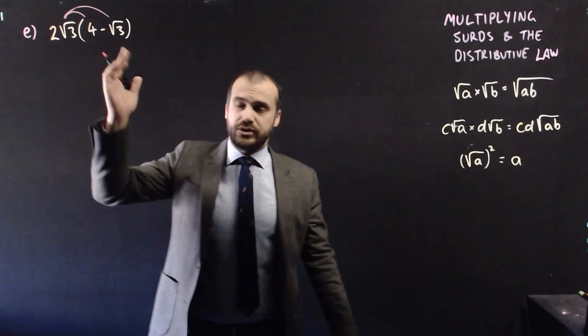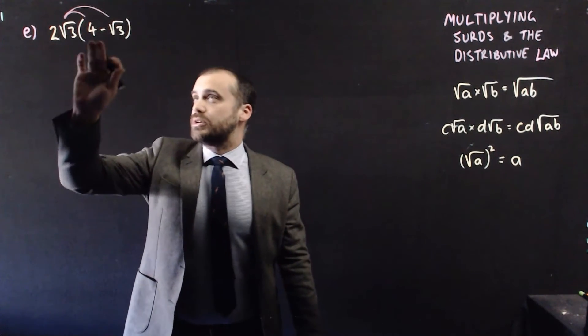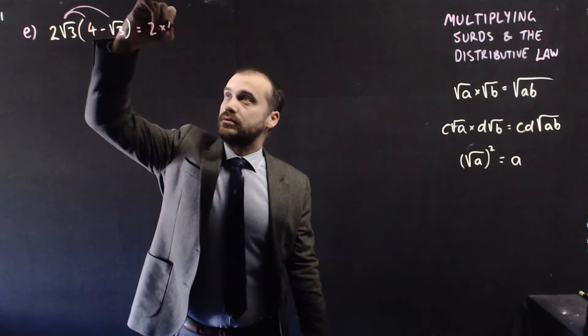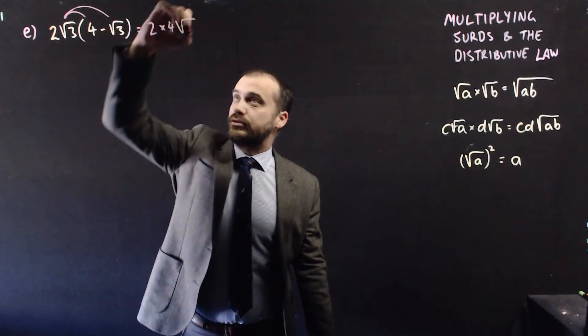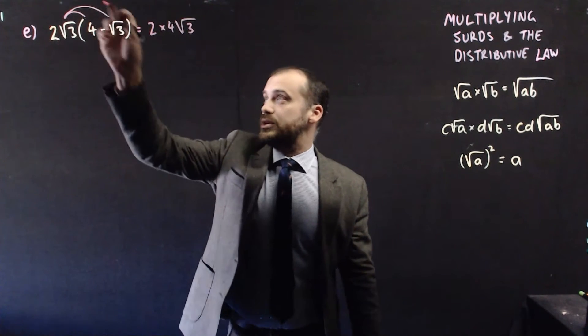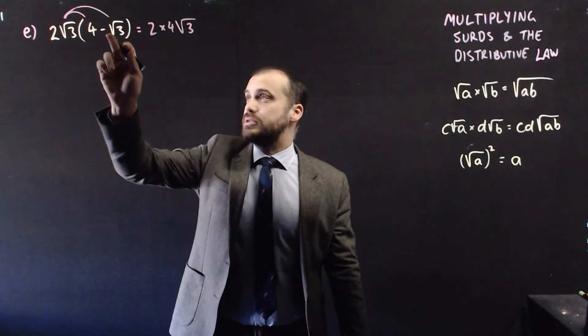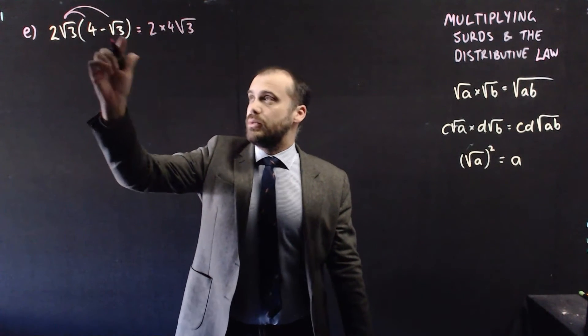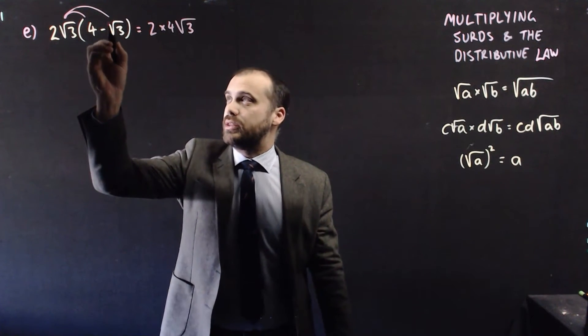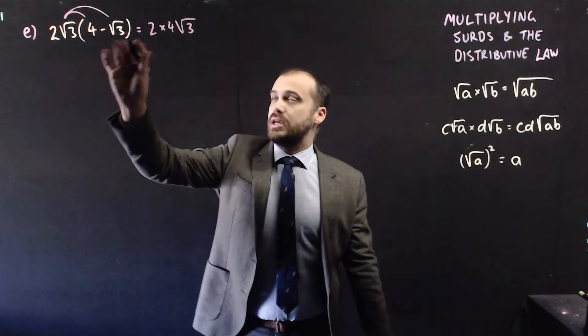That's just a whole number, no surd there. So it's going to be 2 times the 4, and then that root 3. And then this one is going to be 2 root 3 times minus root 3. We can imagine that there's a minus 1 there. So it's going to be 2 times negative 1.